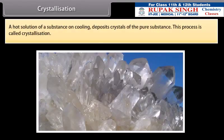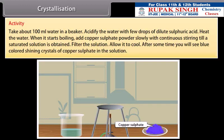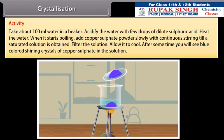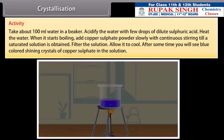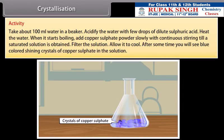A hot solution of a substance on cooling deposits crystals of the pure substance. This process is called crystallization. Activity: Take about 100 ml of water in a beaker, acidify the water with a few drops of dilute sulfuric acid, and heat the water. When it starts boiling, add copper sulfate powder slowly with continuous stirring till a saturated solution is obtained. Filter the solution and allow it to cool. After some time, you will see blue-colored shining crystals of copper sulfate in the solution.